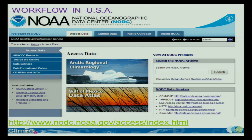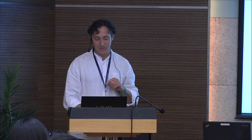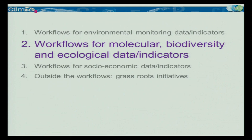That's it for the monitoring data, which is well-organized — the data is collected in a systematic way, then it's quality checked, and made into data products that are easy to use. Then we go to workflows for molecular biodiversity and ecological data, and that's where it's a bit more messy, because we're measuring many different things in many different ways, and it's a lot more difficult to standardize.